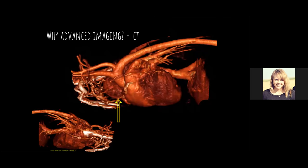CT also showed us 3D reconstruction of the tumor closely associated with the heart and big vessels. It revealed small, tortuous, new vessels that the tumor had created to supply itself with blood — neovascularization. If we resected this, it would grow back very quickly given the high blood supply. There was no way to see this on other imaging. This is one strong example of why CT is really important.